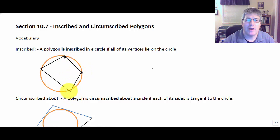In our first diagram here, we see this quadrilateral where all of the vertices lie on the circle. We would say that quadrilateral ABCD is inscribed in the circle.